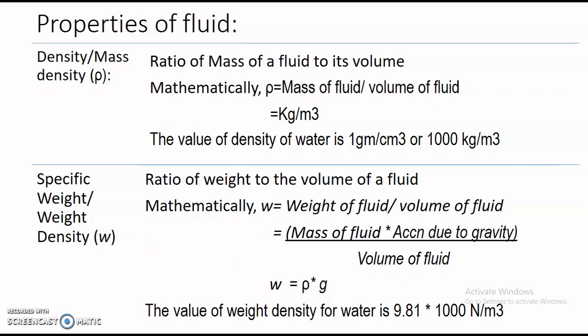Now let us start with the properties of fluid. The first property is density, also called mass density, denoted by the letter rho (ρ). It is the ratio of mass of a fluid to its volume. Mathematically, ρ = mass of fluid / volume of fluid. The unit is kg per meter cube. The standard value of density of water is 1 gram per centimeter cube, or 1000 kg per meter cube.